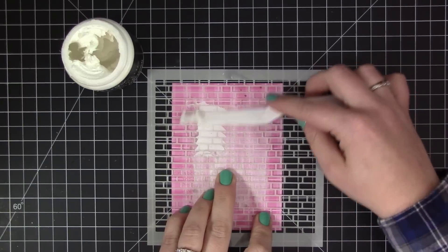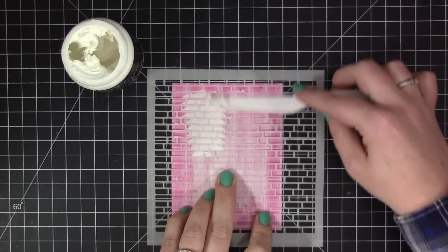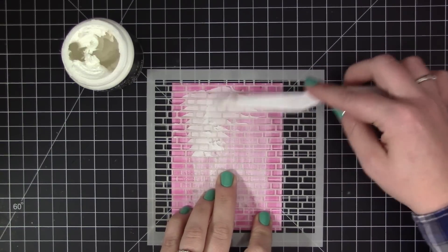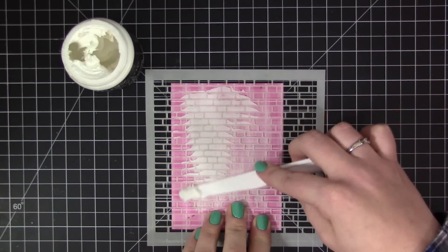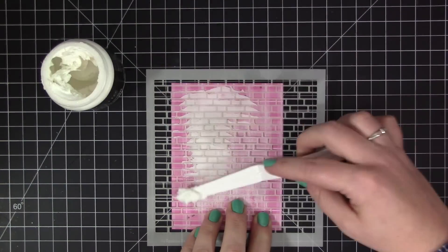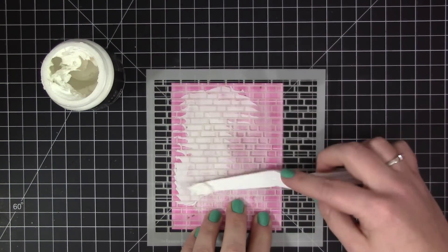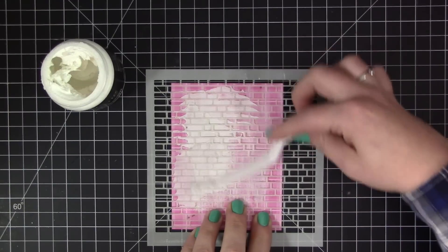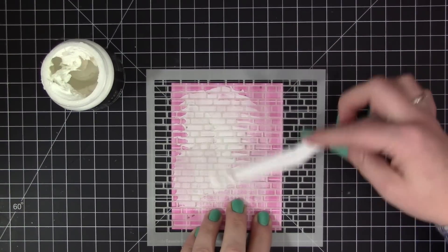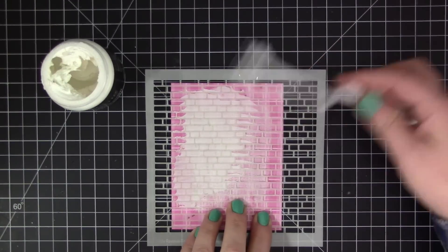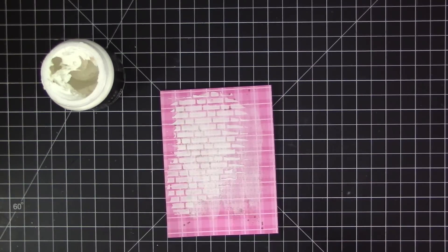As I'm adding this embossing paste with the brick stencil here, I'm adding it directly over the area where we've added some of that craft dye ink. As the embossing paste dries, the wet paste is going to absorb some of that dye ink and it's actually going to show through the finished dried brick area there.